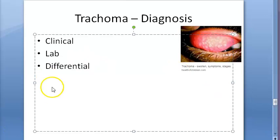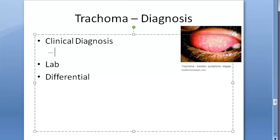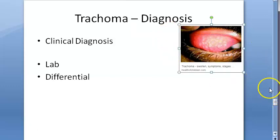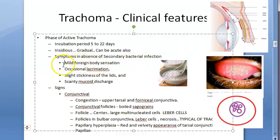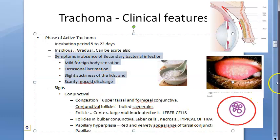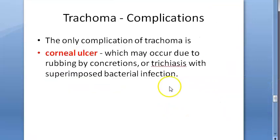Moving to the actual topic of this video - diagnosis. For clinical diagnosis, we look at the typical conjunctival signs, corneal signs, and symptoms. Symptoms include mild foreign body sensation, occasional lacrimation, slight stickiness of the lids, and scanty mucoid discharge.